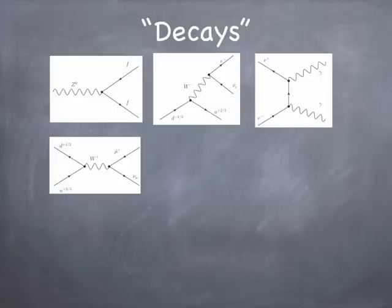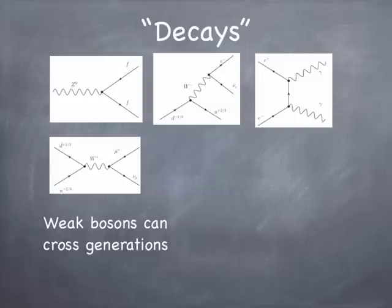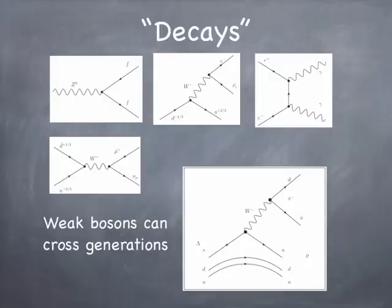Notice that the weak bosons — the W-plus and W-minus — are interesting because they change the flavors of particles. They change electrons into neutrinos, up quarks into down quarks. They can even change an up quark into a strange quark. Here's an example: a strange quark changing into an up quark, emitting a W-minus, which then decays into a pi-minus made of a down quark and an up-bar.